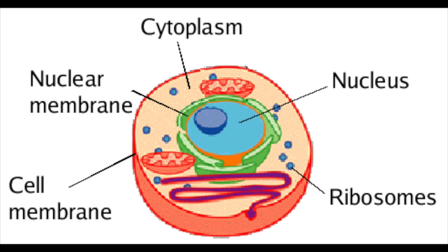We'll start at the top with the nucleus, which is very important. This controls the cell and contains our DNA and genes. That's quite simple but very important in an animal cell.